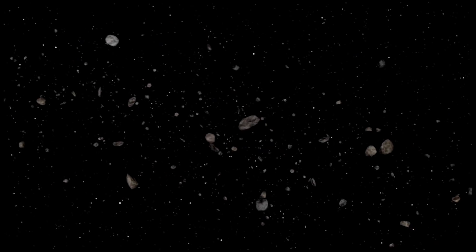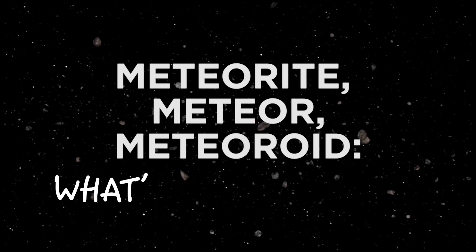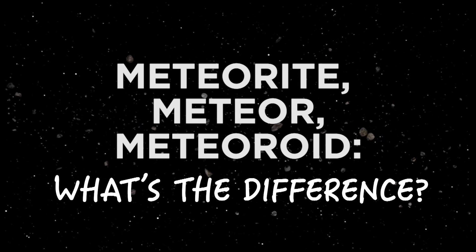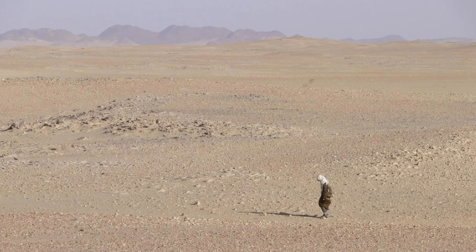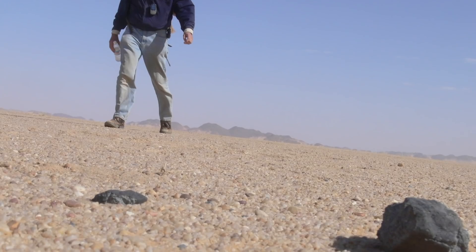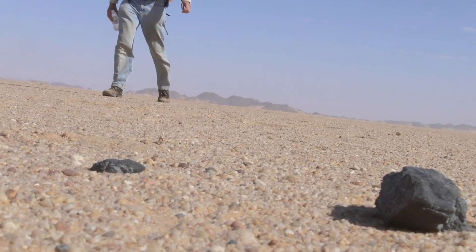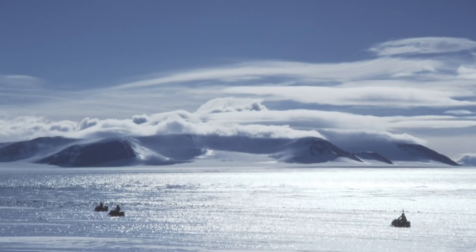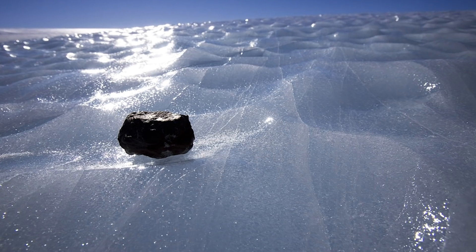There are a lot of terms that involve the word meteor. Meteorites are rocks from space that have hit the ground and we have recovered. We recover them mostly in deserts — hot deserts like the Sahara Desert, or cold deserts like Antarctica.